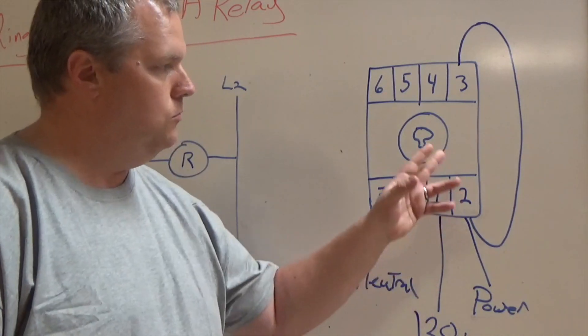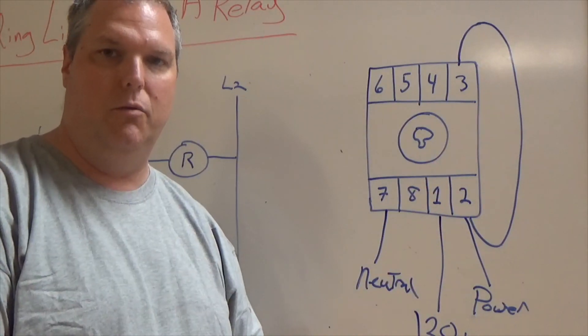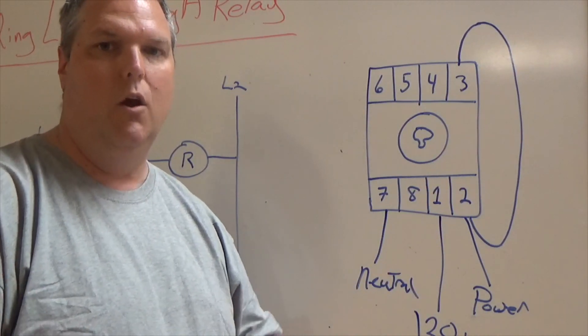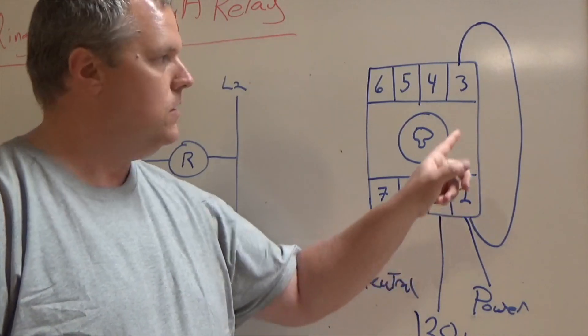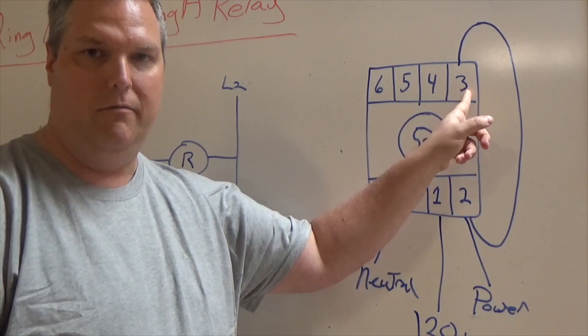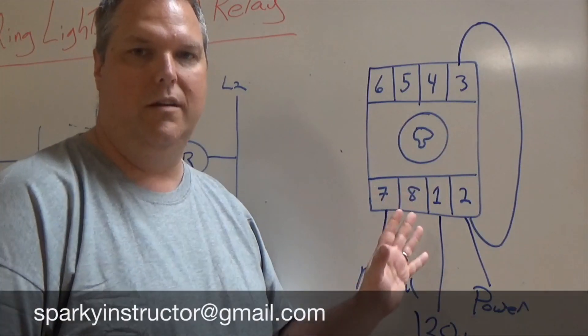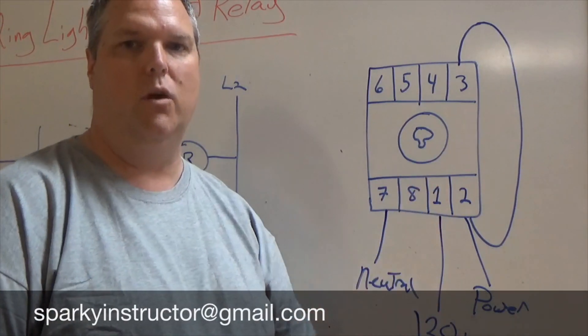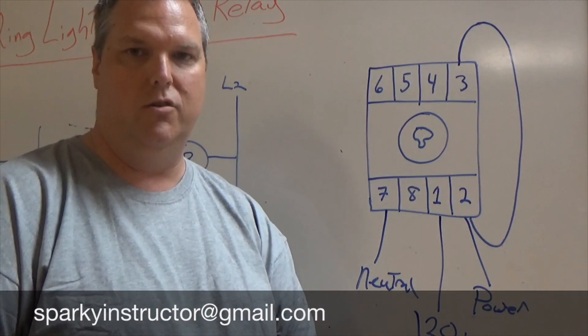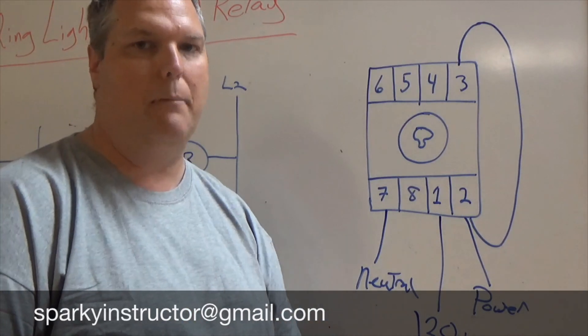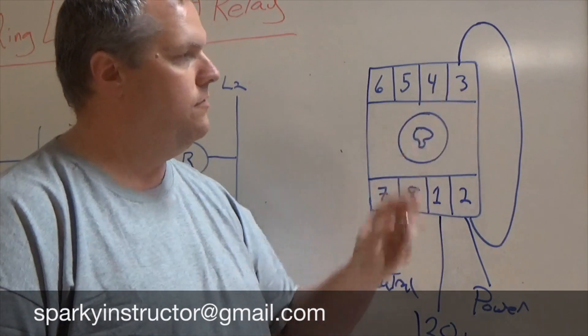So again, to bring you up to speed, our holding, when we energize the coil, power goes from terminal one to terminal three. When looking at this relay, terminal one is where we're carrying our unswitched 120 volt power. That power is connected with four and three.